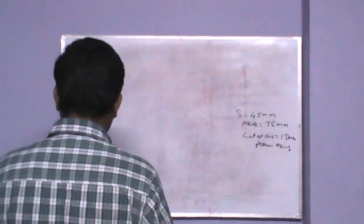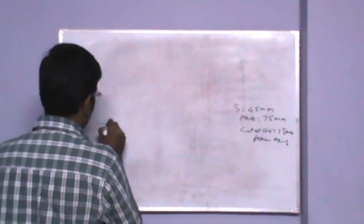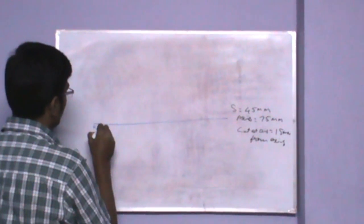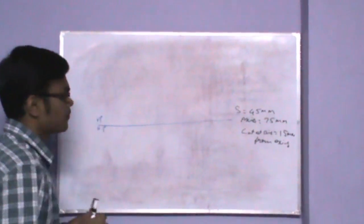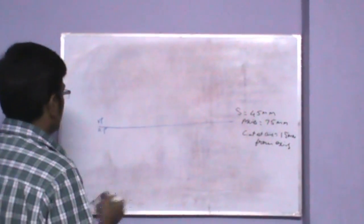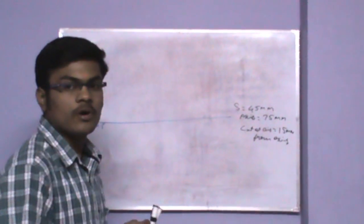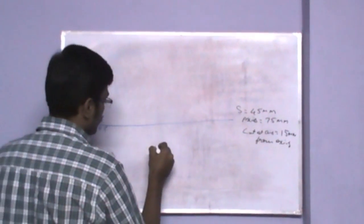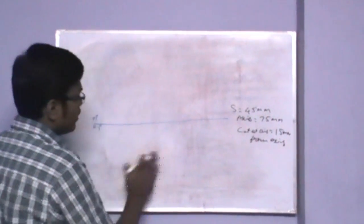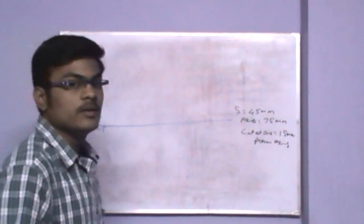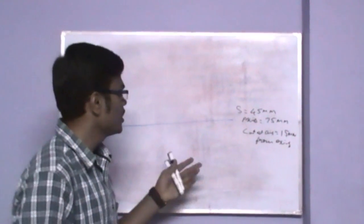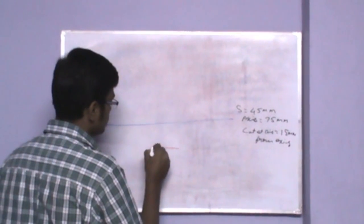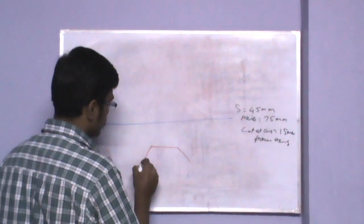Let me draw the axis. This is the horizontal plane and vertical plane. The base is on the horizontal plane, and this is the vertical plane. I have to draw a hexagonal prism of base side 45mm. The hexagonal prism of side 45mm is resting on HP, so one of its bases is resting on HP. The prism should be drawn like this.